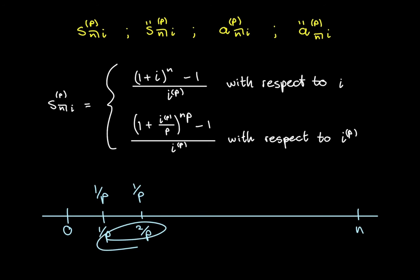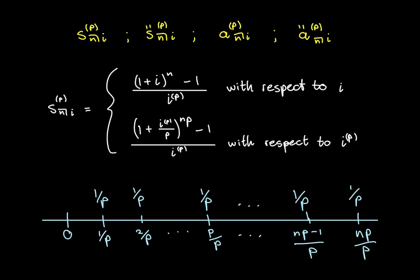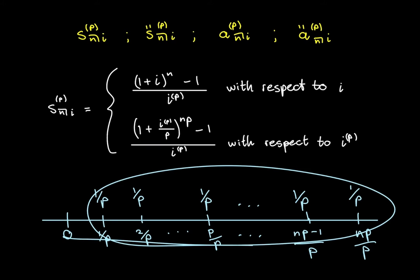And then we do this all the way up until the end of the nth period. Now, when we reach the end of the first period, which is 1, what we essentially have arrived at is p over p, because if you just cancel those p's, you get 1. And then again, we are still paying 1 over p. And we pay this all the way up until the end, 1 over p, on the last date. And just for continuity, we have np minus 1 over p. We pay 1 over p over here. So this n is actually np over p.